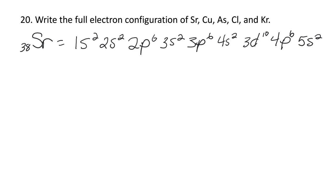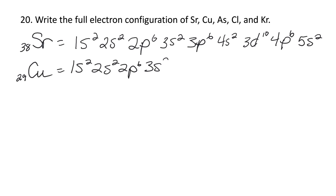If you don't want to use the periodic table, just use the list I gave you: 1S, 2S, 2P, 3S, 3P, 4S, 3D, 4P, 5S — and put how many electrons are in each one. Let's do copper next. Copper is number 29, and it ends at 3D9. So: 1S2, 2S2, 2P6, 3S2, 3P6, 4S2, 3D9. Count these up and it should be 29 — and it is.